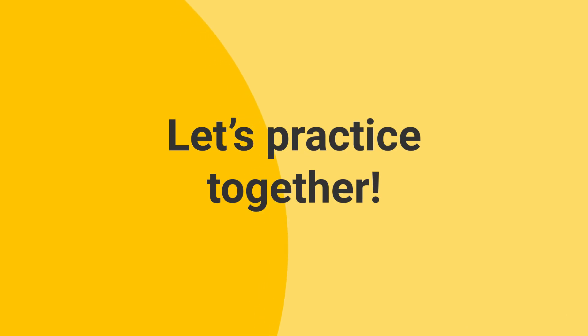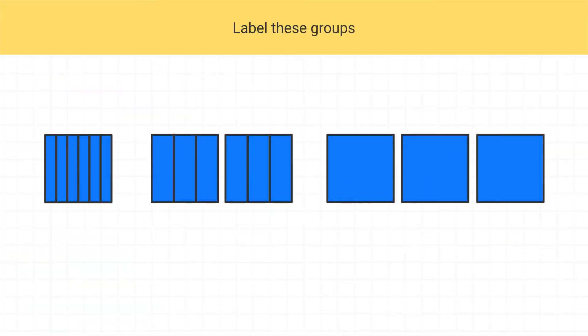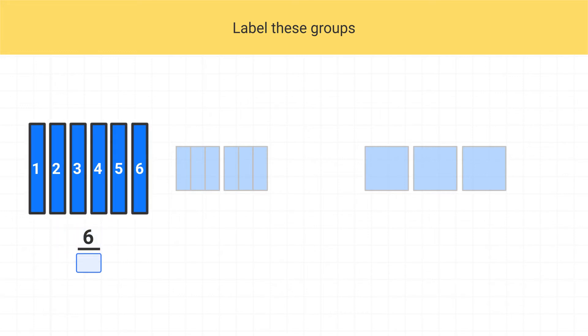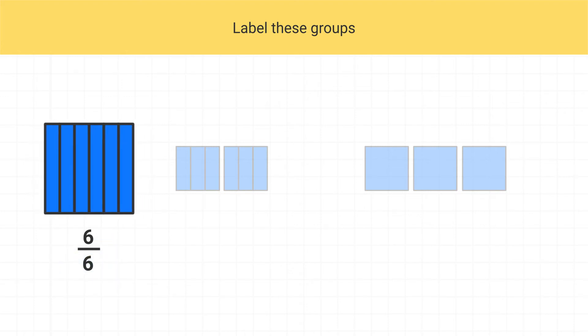Let's practice doing this together. Let's label all of these groups, starting off with this first group. What can I write? Well there's a total of 6 shaded pieces in the square, so the numerator of the fraction is a 6. And the square, it's split up into a total of 6 pieces, so the denominator is 6 as well. This is the fraction 6 sixths.